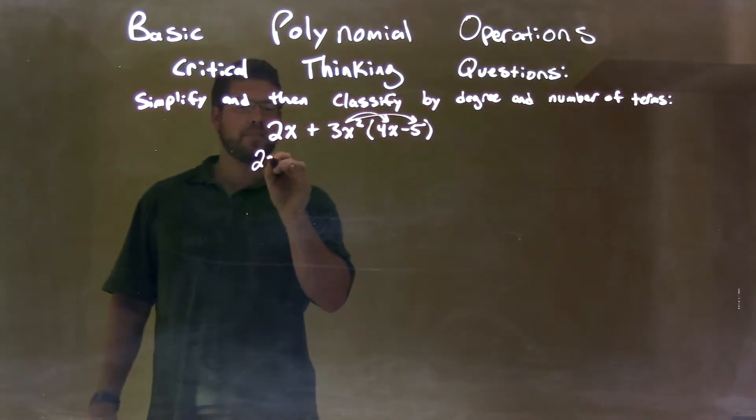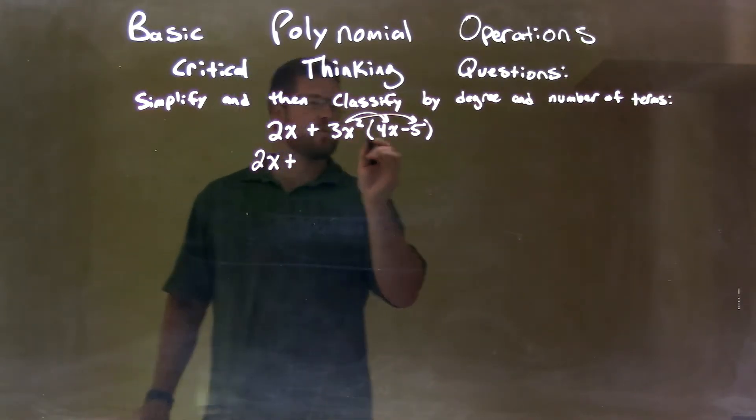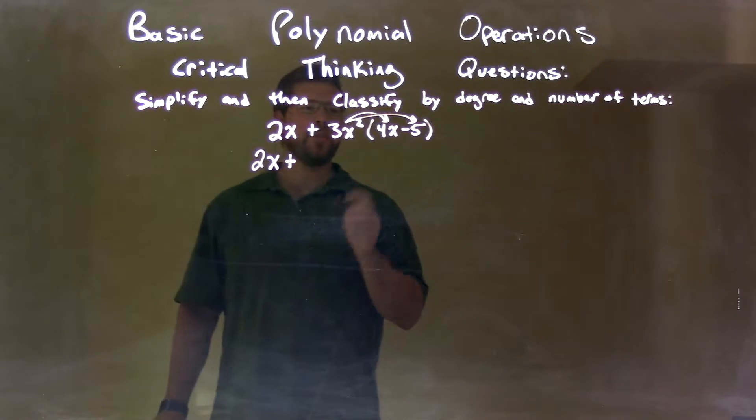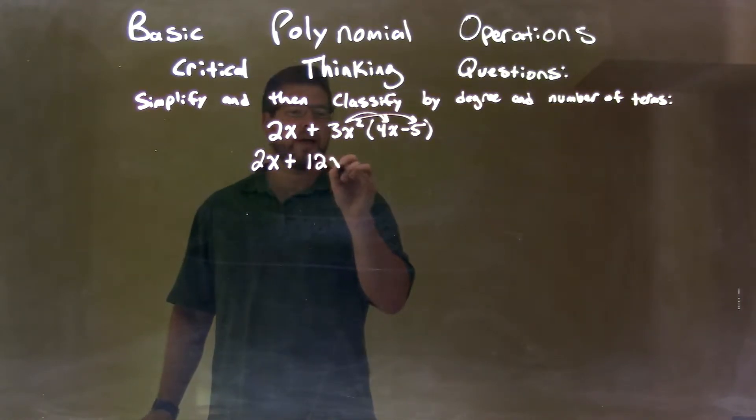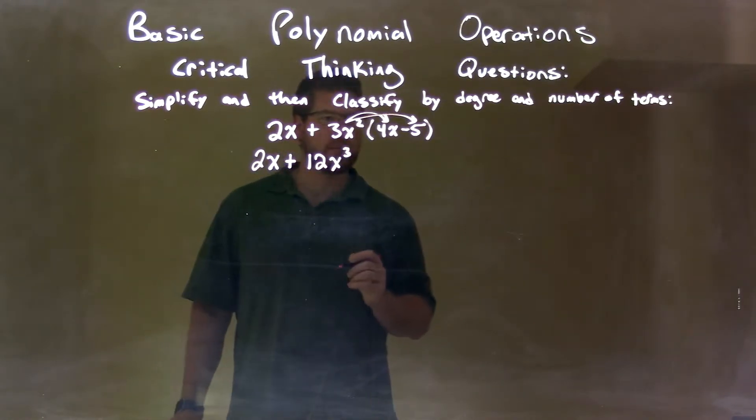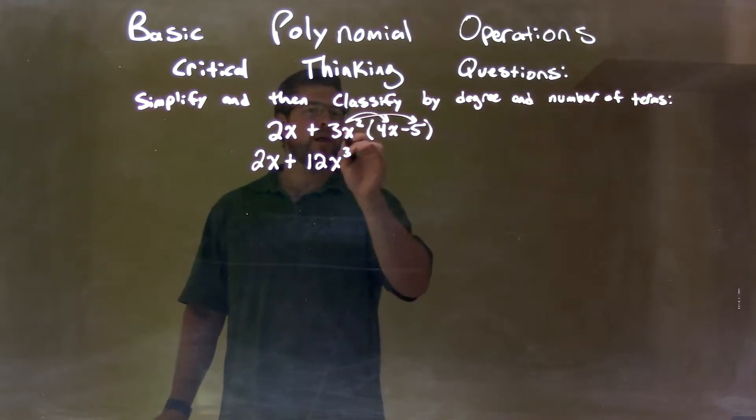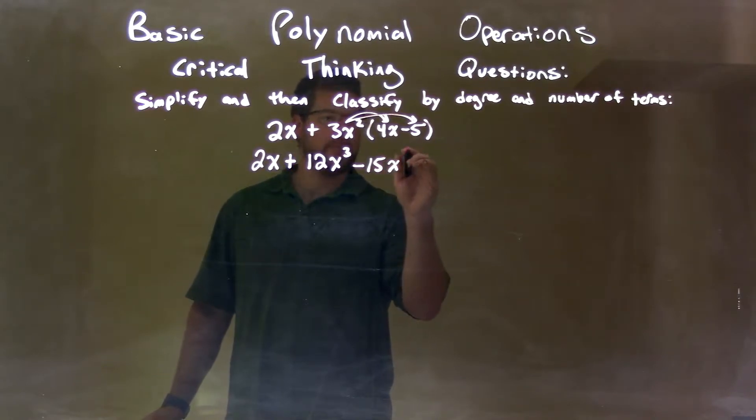So 2x comes down. 3x squared times 4x is 12x to the third power. Then 3x squared times a negative 5 is minus 15x squared.